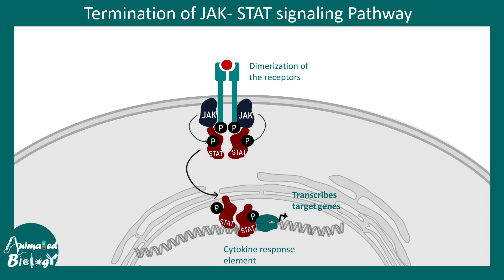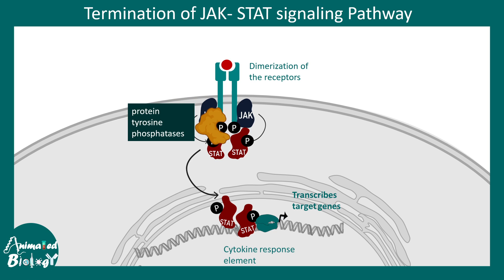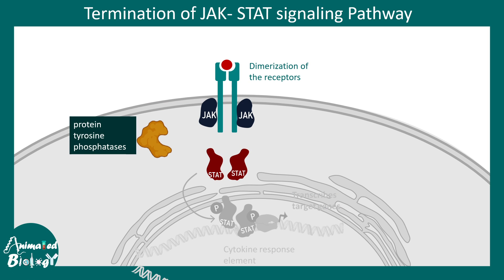Now let's talk about termination of the JAK-STAT signaling pathway. While initiation is important, termination is more critical to prevent uncontrolled signaling. One strategy involves specific phosphatases — protein tyrosine phosphatases — that remove the phosphate group from the receptor, rendering the signaling pathway inactive.